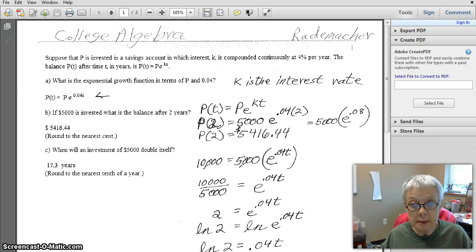So take e to the .08, calculate that, multiply by 5,000, round to two decimal places because that's the way we write money, and you'll have $5,416.44 after two years.